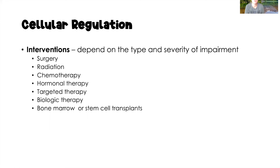Interventions for impaired cellular regulation depend on the type and severity of the impairment. We might see surgery to debulk a tumor, radiation and chemotherapy to shrink tumors, hormonal therapy — which is often seen in breast cancer — targeted therapies, biologic therapies, and bone marrow or stem cell transplants.